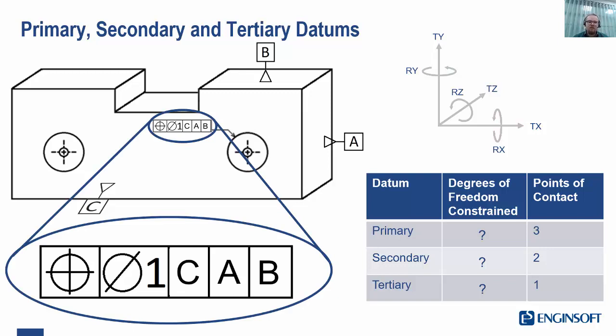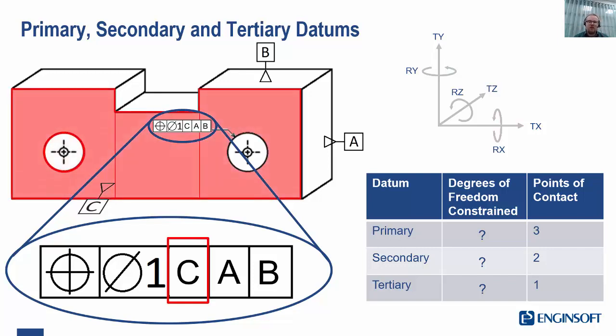In our example here, we have a position tolerance with the datum reference frame CAB. Our datum C, this surface at the front here, controls the three degrees of freedom that we see on our drawing: TX, RX and RY. Our second datum A controls two degrees of freedom, TX and RZ. Our final tertiary datum controls one degree of freedom, TY.